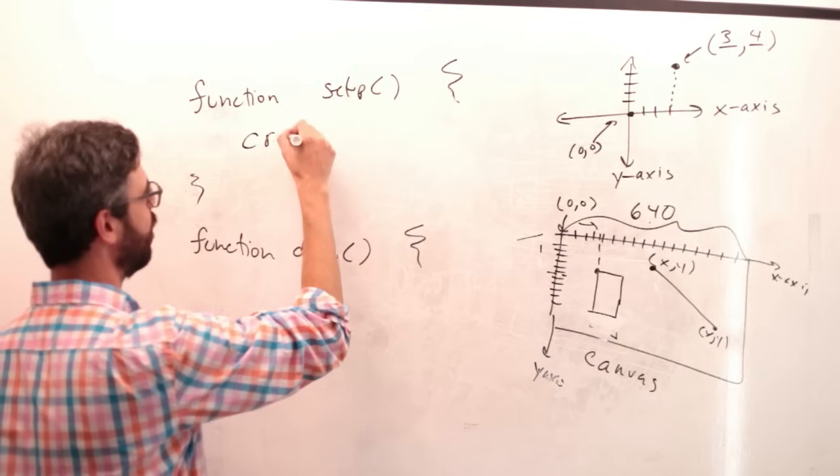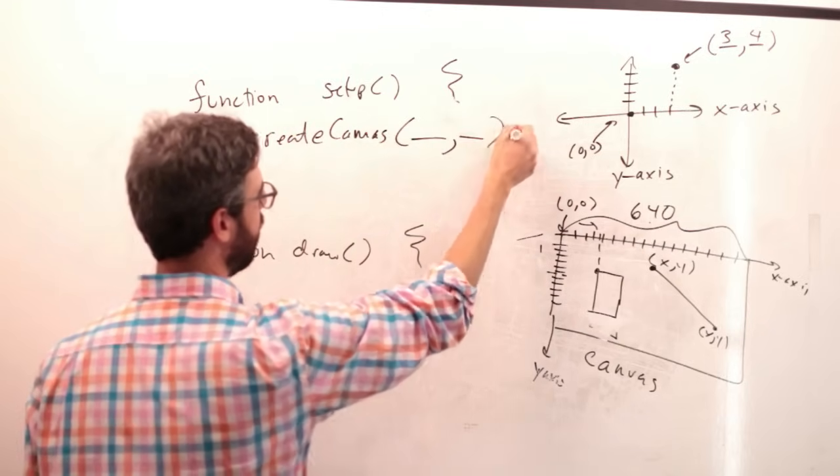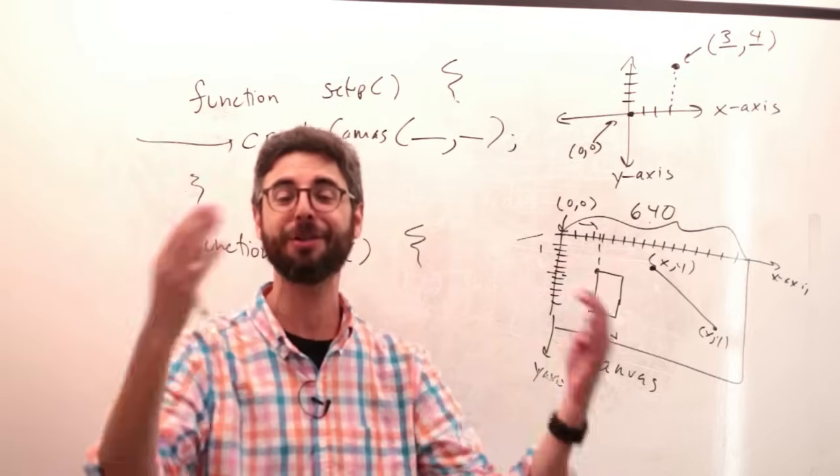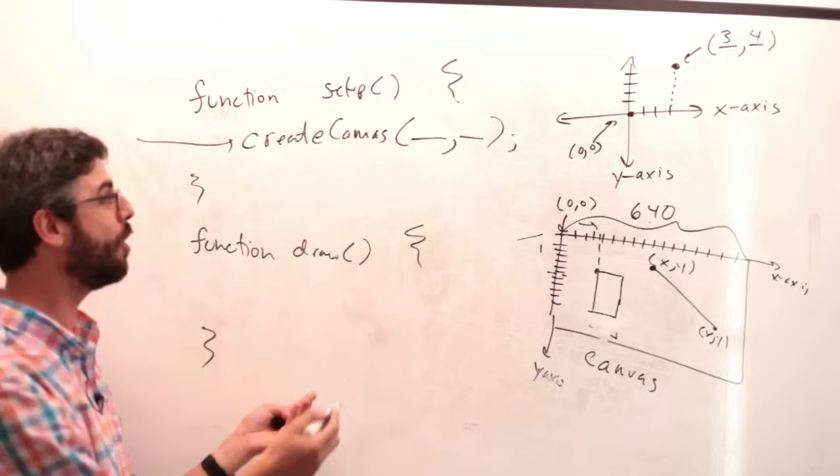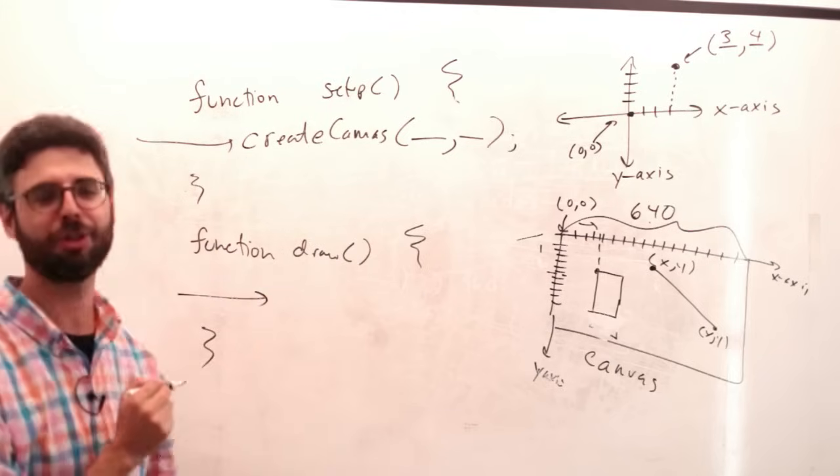The setup function is where you do the things you do right when your program starts, like create canvas. So when you're, to set up your canvas, to set up your p5 sketch, you need to create a canvas in the setup function. Then you want to draw stuff to that canvas. Where do you put all your drawing stuff? Inside this drawing function.